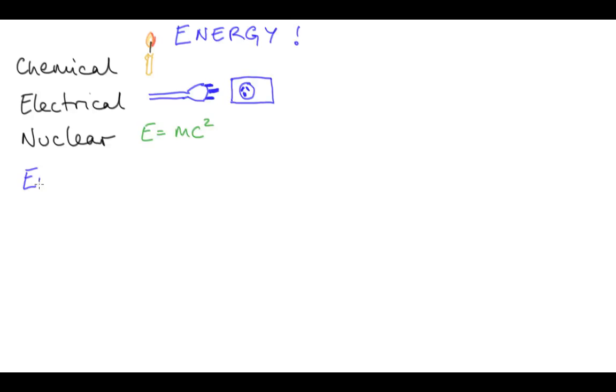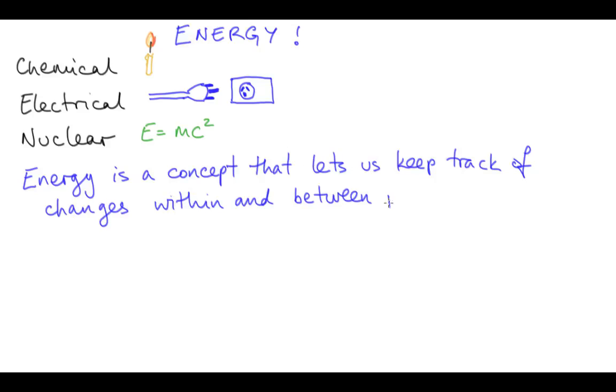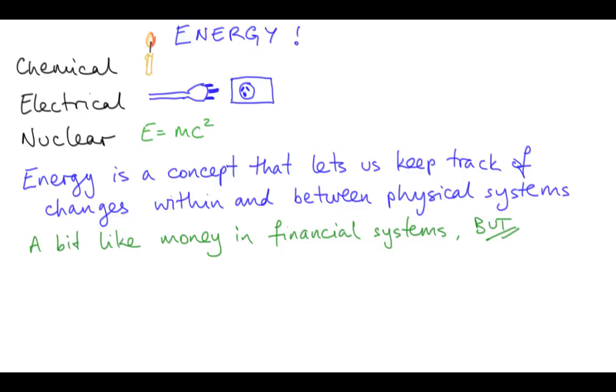No doubt you've already heard about different kinds of energy. Chemical energy, electrical energy, or nuclear energy, for example. But what is energy really? Well, it's actually just a kind of accounting system that lets us keep track of interactions between objects and physical systems. A little bit like money lets us keep track of the exchange of goods and services in a social and economic system.